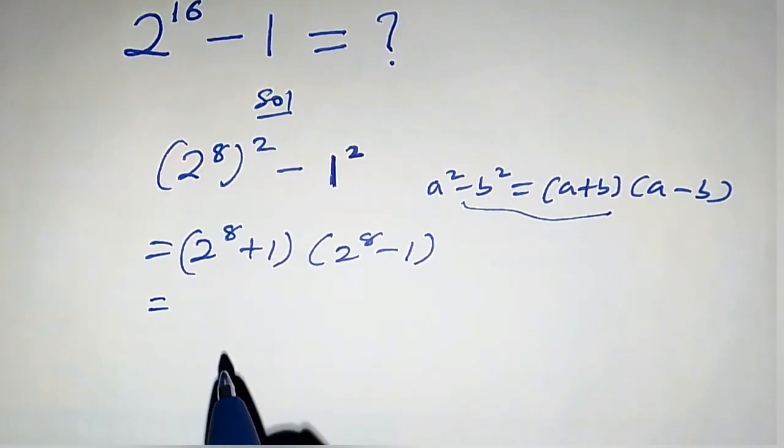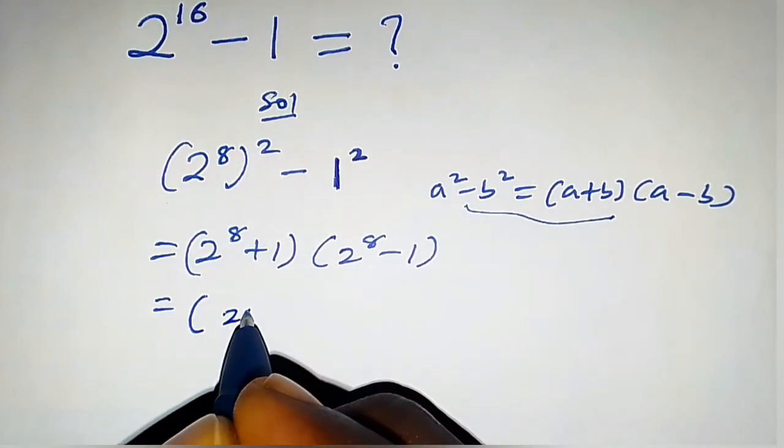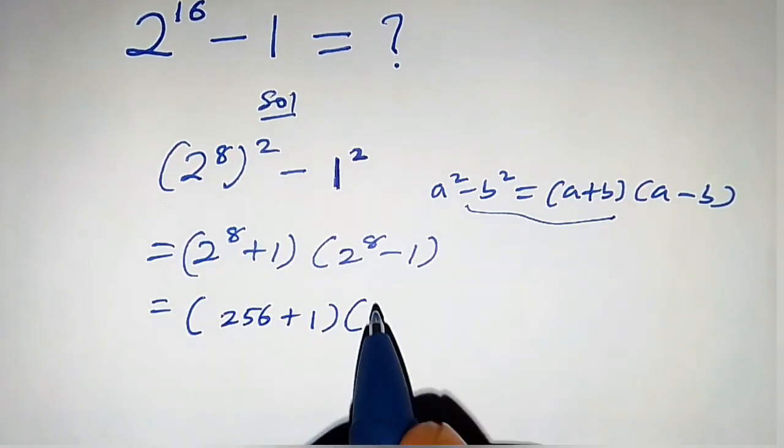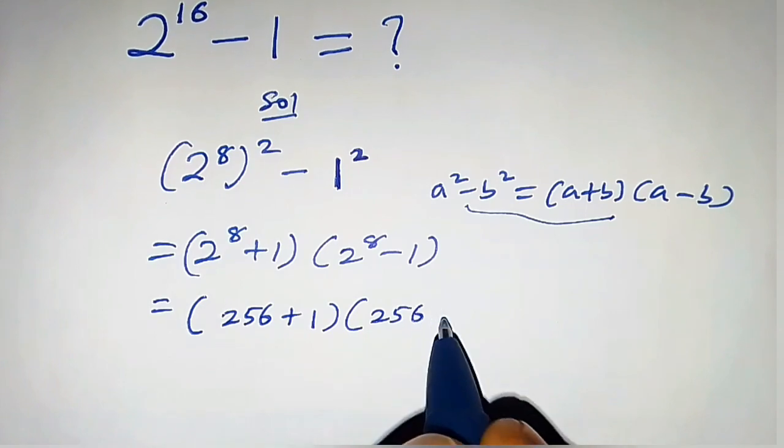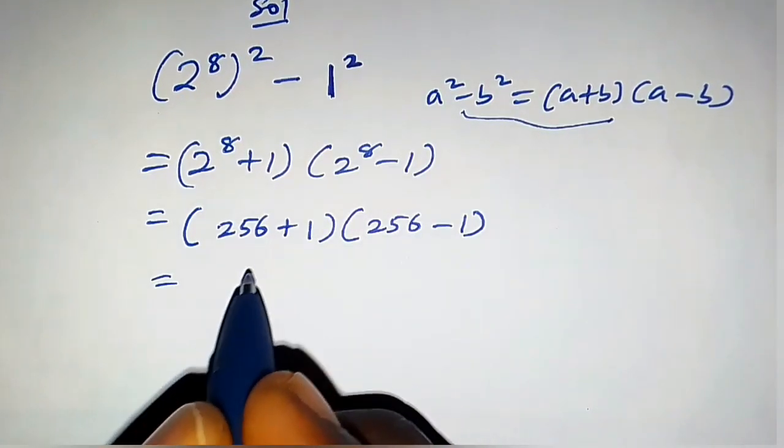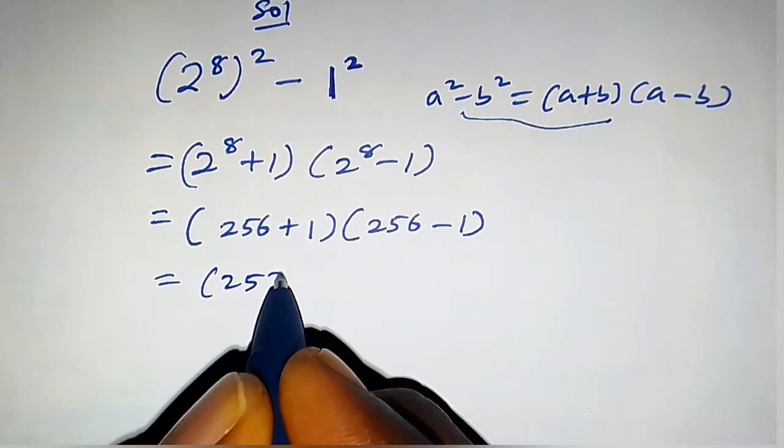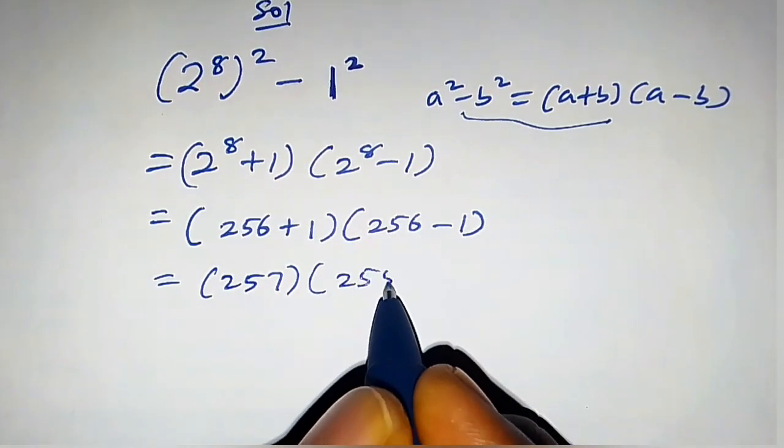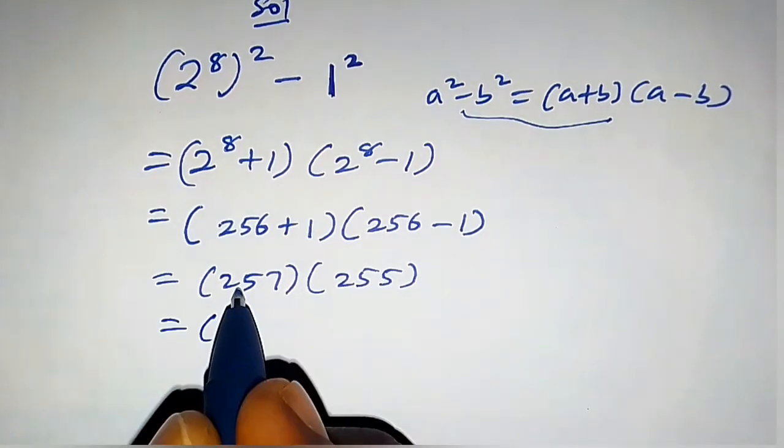This equals 2 raised to the power 8, that is 256, plus 1, times 2 raised to the power 8, that is 256, minus 1. So let's add this. This equals 256 plus 1, that is 257, times 256 minus 1, that is 255.